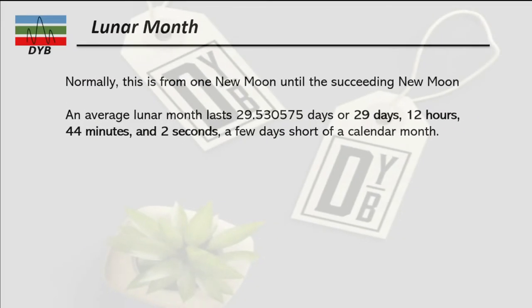Now let's look at the lunar month. The lunar month runs from one new moon to the next succeeding new moon. On average, a lunar month lasts 29.530575 days, or approximately 29 days, 12 hours, 44 minutes, and 2 seconds — slightly shorter than the calendar month.